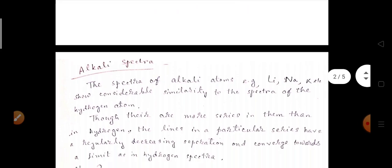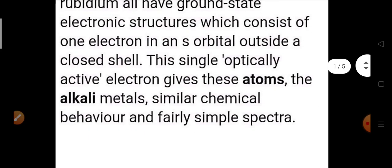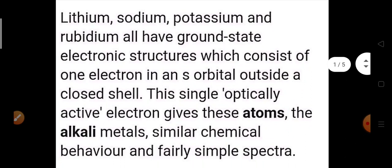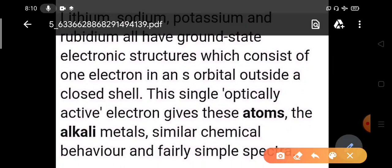First of all, we should know what are the alkali atoms. Alkali atoms are lithium, sodium, potassium, rubidium and they all have ground electronic structure which consists of one electron in an S orbital outside a closed shell.